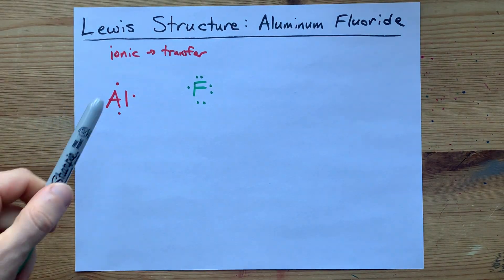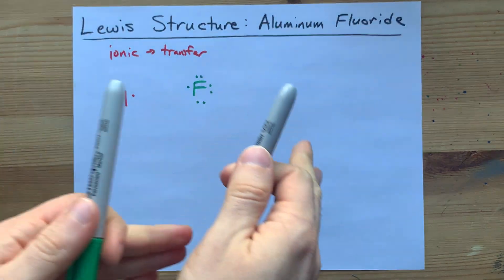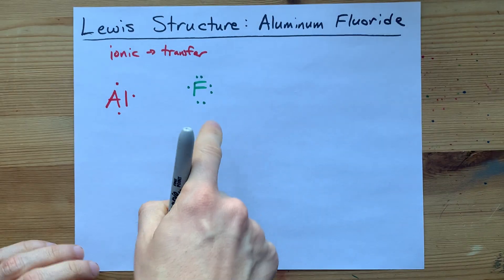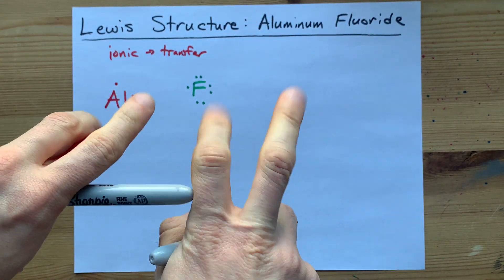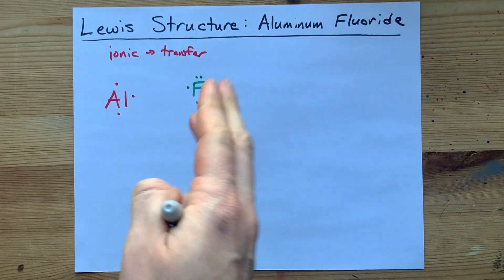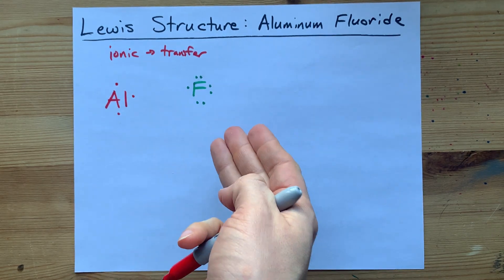What we said is the metal will give up its electrons or transfer them to the non-metal. Non-metals want eight electrons in their outer shell. It's called the octet rule, and it's because it makes them similar to noble gases. It's just how you make non-metals stable.